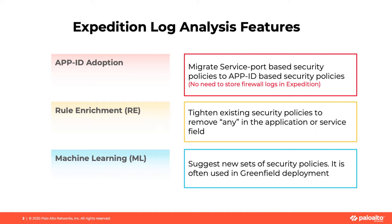The first feature is App ID Adoption. Your main goal is to convert the service port-based security policies to application-based security policies. This is the only feature out of the three that does not require firewall logs stored in Expedition. App ID Adoption is very similar to the Policy Optimizer in PAN-OS version 9.0 and above, so if your PAN-OS device is running 9.0 and above, I would strongly recommend using the Policy Optimizer feature in the PAN-OS device.